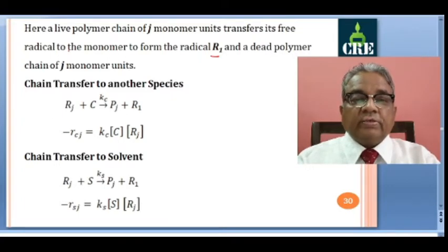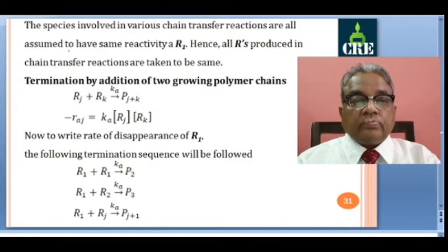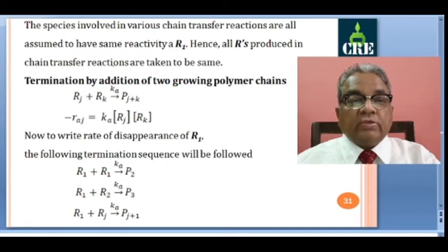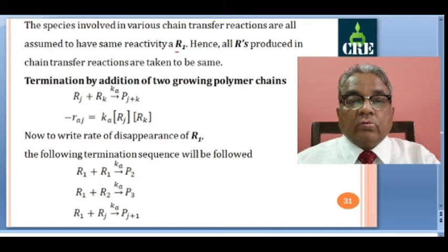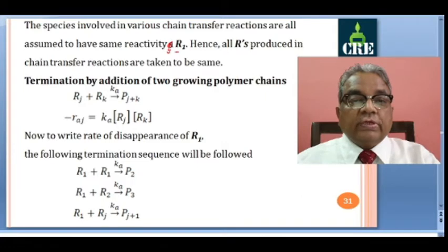Three chain transfer mechanisms are possible. The species involved in various chain transfer reactions are assumed to have the same reactivity as R1. Hence all R's produced in chain transfer reactions are taken to be the same.